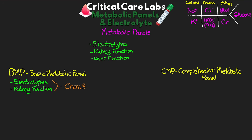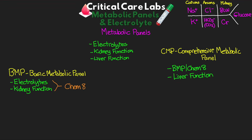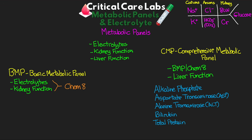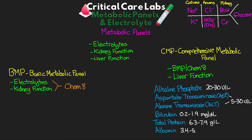Moving on to the comprehensive metabolic panel — the CMP — this test is inclusive of all tests from the BMP but also includes tests to look at liver function. It's much less common in the ICU than the BMP, but contains important information when needed. The additional tests on the CMP are: alkaline phosphatase, with normal of 20 to 30 units per liter; AST and ALT, both 5 to 30 units per liter; bilirubin, 0.2 to 1.9 mg per deciliter; total protein, 6.3 to 7.9 grams per liter; and albumin, 3.4 to 5.4 grams per liter.